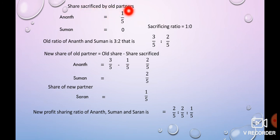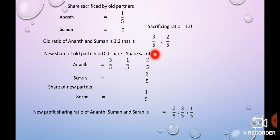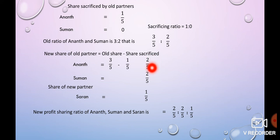Share sacrificed by old partner: Anandhan sacrifices 1 by 5. Sacrificing ratio is 1 is to 0. Old ratio of Anandhan is 3 is to 2, that is 3 by 5 is to 2 by 5. Old share minus sacrifice: Anandhan's old share is 3 by 5, share sacrificed is 1 by 5, so new share is 2 by 5. Suman's new share remains 2 by 5. New ratio is 2 by 5, 2 by 5, 1 by 5, that is 2 is to 2 is to 1.